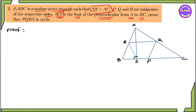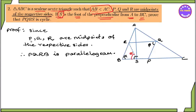PQR are the midpoints of the respective sides. PQR are the midpoints of their respective sides. So P, Q, and R are midpoints.